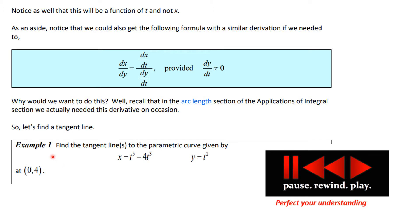Our first example: find the tangent line — notice it says plural, we'll see about that — to the parametric curve given by x(t) = t⁵ − 4t³, y(t) = t², evaluated at the point (x, y) = (0, 4). Give it a try.